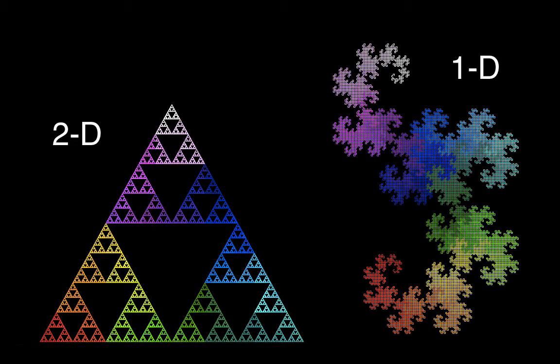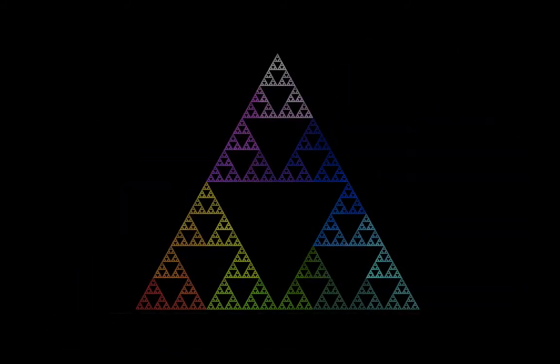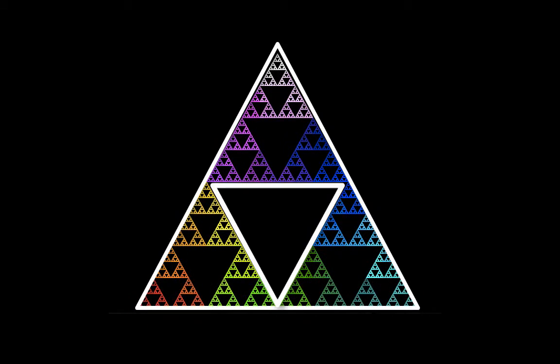In general, the initial geometric fractal must fall into two categories, either two-dimensional or one-dimensional. Once this distinction has been made, careful analysis of the fractal must be made to determine what the repeating pattern is.